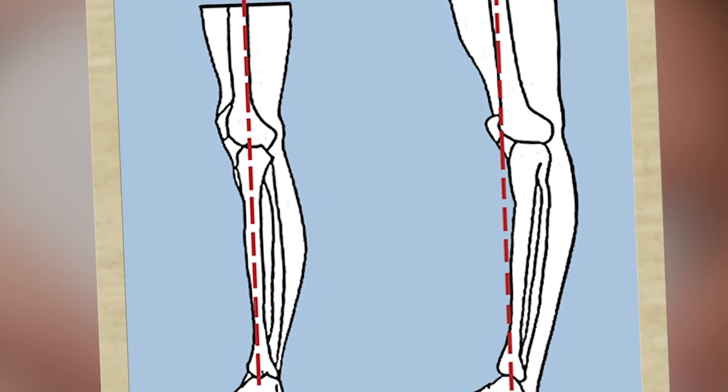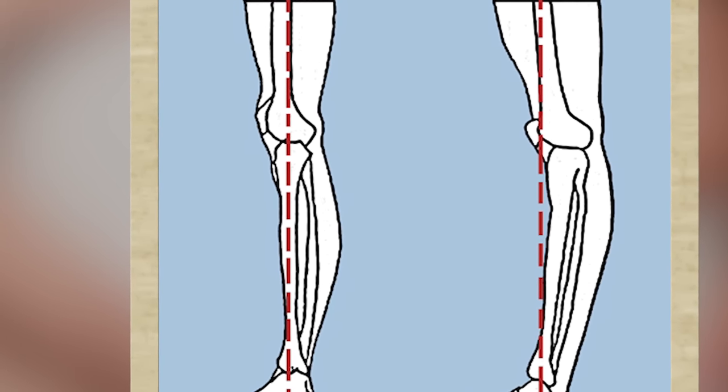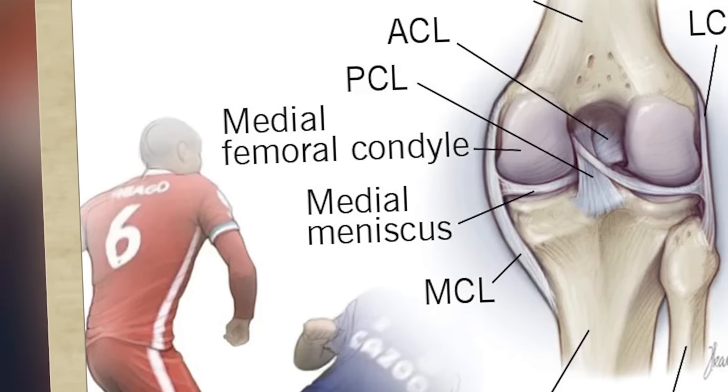One term that comes up is hyperextension — when you actually bend your knee the complete opposite way it's supposed to bend. Yes, that's what hyperextension means, and you can get a rating for that. We're going to talk about that more a little bit later.